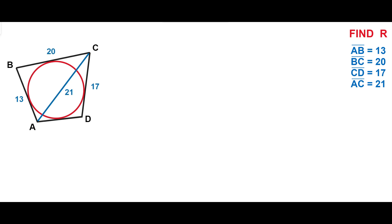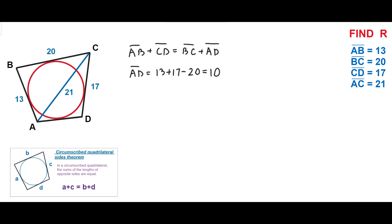As a first step, let's determine the length of side AD. We can calculate this by using the circumscribed quadrilateral sides theorem. In a circumscribed quadrilateral, the sums of the lengths of opposite sides are equal. In our case, AD = 13 + 17 - 20 = 10.